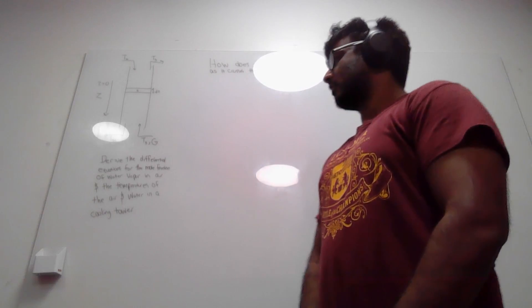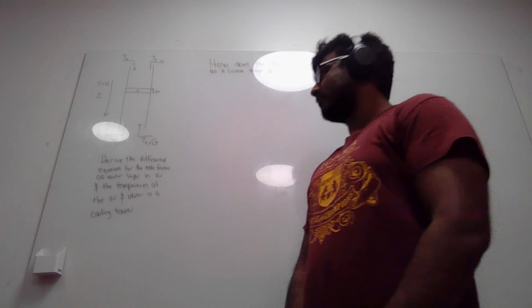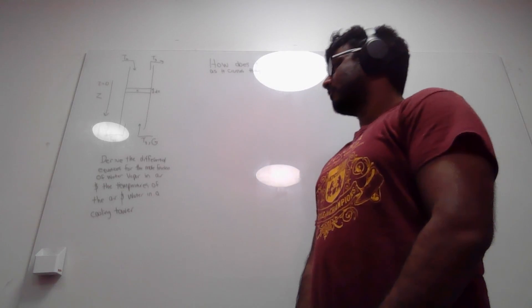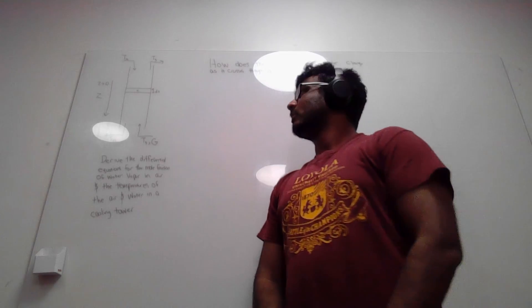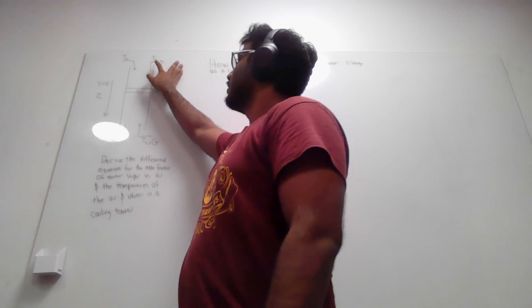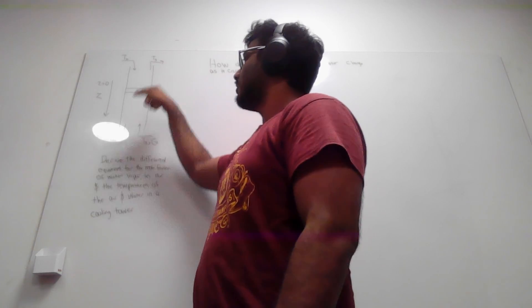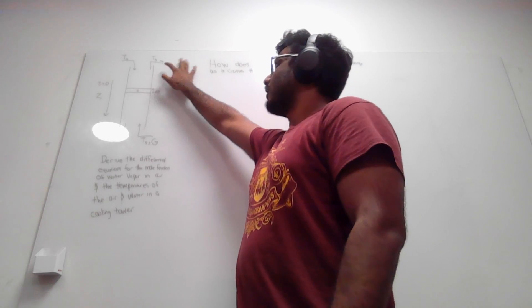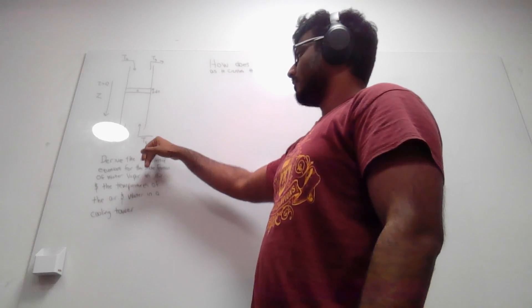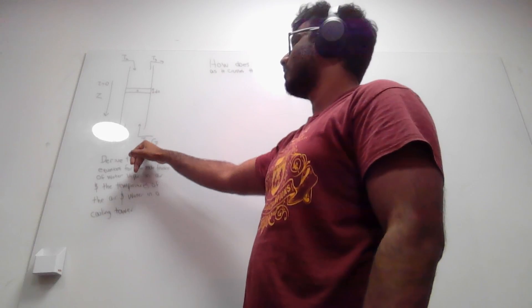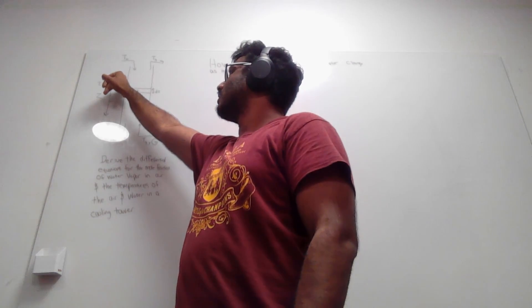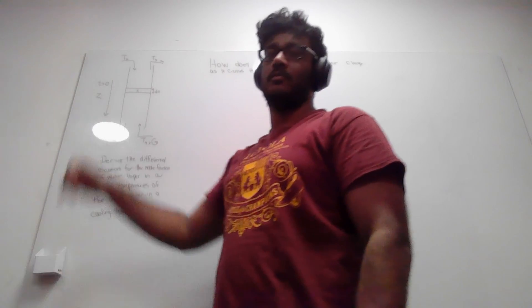For part B1 of this exam we have to derive the differential equations for the mole fraction of water vapor in air and the temperatures of the air and water in a cooling tower. We have the cooling tower with the water feed going in, water going out, air going out, and air going in, as well as the gas flow rate. The direction of water is defined by z, with the top being positive and the bottom negative.